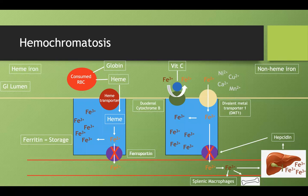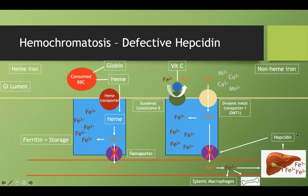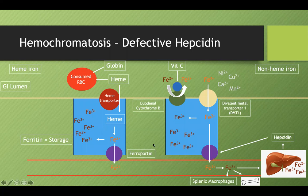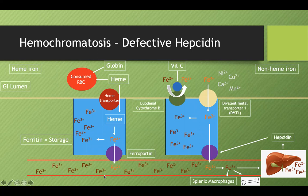What happens in hemochromatosis is that this hepcidin hormone is defective. We don't produce the hepcidin that we really need. If you don't have any hepcidin, then these ferroportin molecules are able to roam freely. There's nothing to inhibit them from transporting all the iron in the duodenal enterocyte into the bloodstream. So you're going to get iron overload.